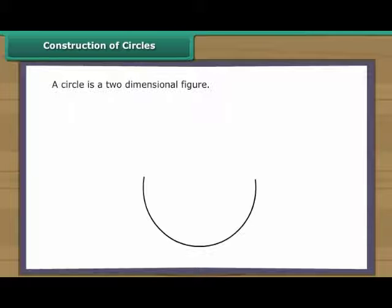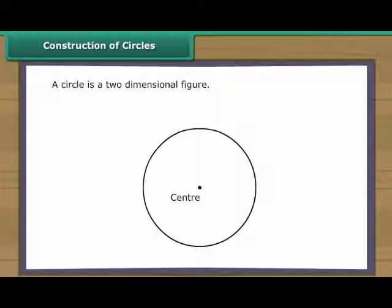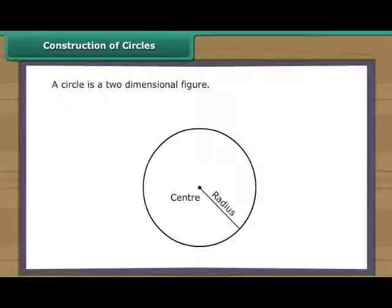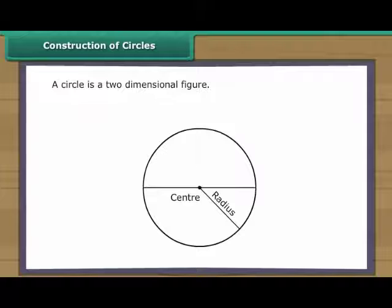Construction of Circles. A circle is a two-dimensional figure. Every circle has a centre. The distance between the centre and the boundary of a circle is known as its radius. The line segment through the centre of a circle with its end points touching the boundary is known as the diameter. The diameter of a circle is twice its radius.